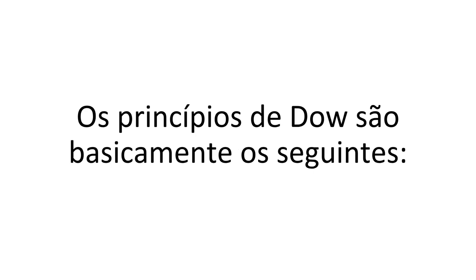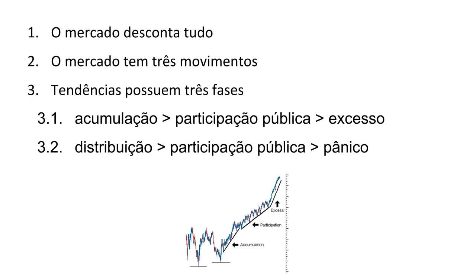Os princípios de Dow são basicamente os seguintes: um, o mercado desconta tudo — já falamos sobre isso. Dois, os mercados têm três movimentos: você tem uma macro tendência que às vezes dura semanas; dentro dessas macro tendências você tem tendências menores que muitas vezes vão contra a macro tendência, em períodos de dias; e dentro dessas micro tendências você tem outras que podem ir a favor da macro tendência. É uma questão do preço ser um fractal — você tem uma macro tendência e outras tendências dentro delas.